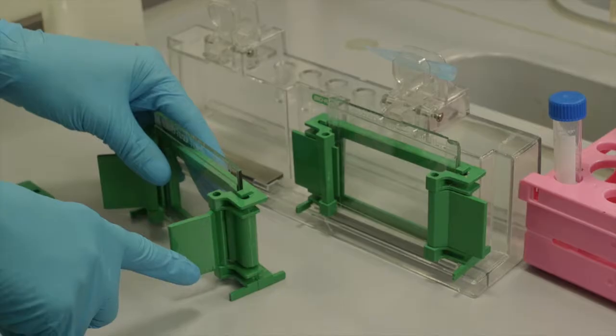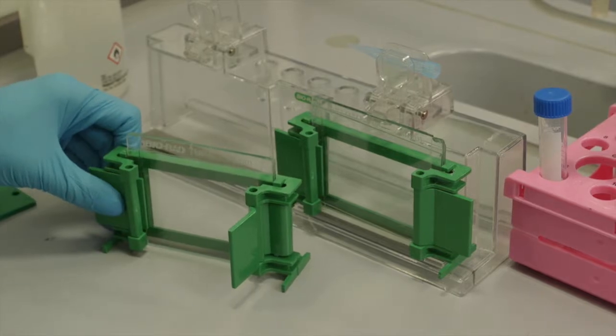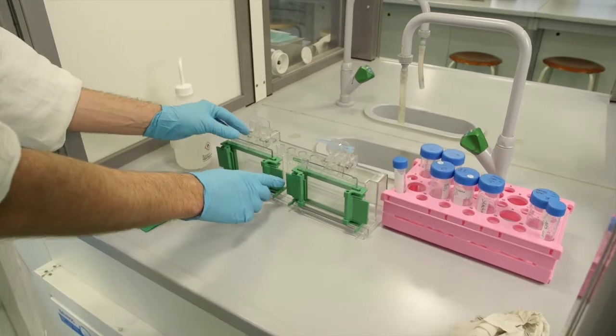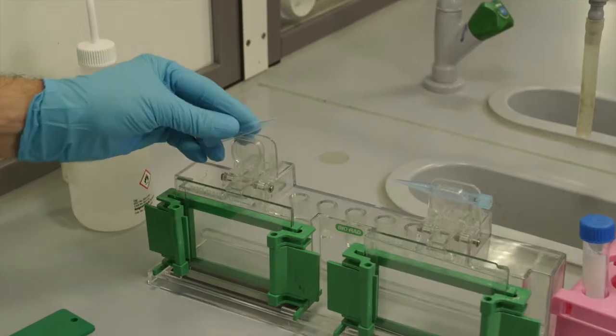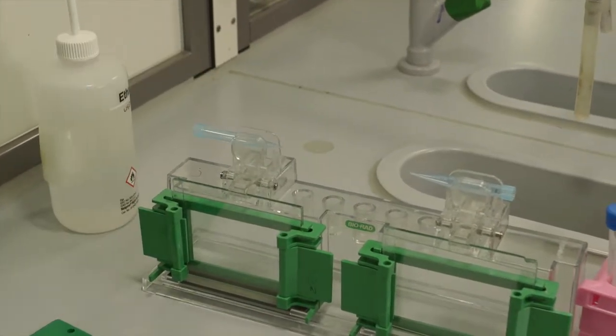Turn the clamps so that the glass plates are pressed together. The feet of the frame have to be on the bottom. Now place the casting frame with the glass plates in the casting stand. If necessary, fit in a pipette tip in between for extra pressure. Make sure that the glass plates do not leak and are properly positioned.